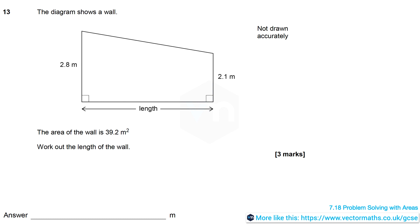In question 13, it says the diagram shows a wall, and the area of the wall is 39.2m², and we need to work out the length of the wall.